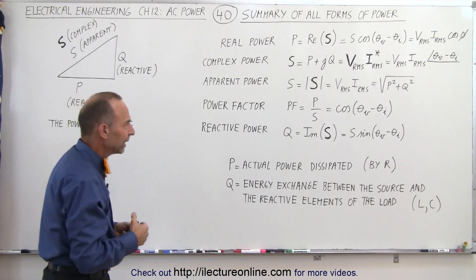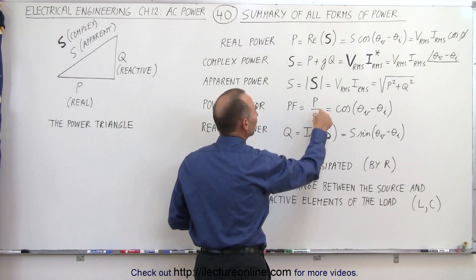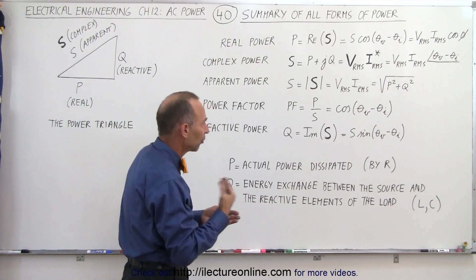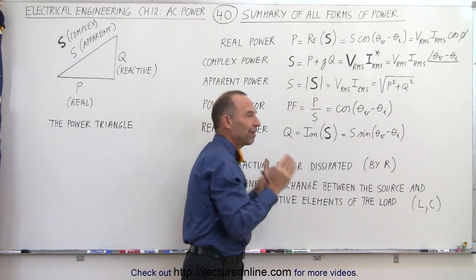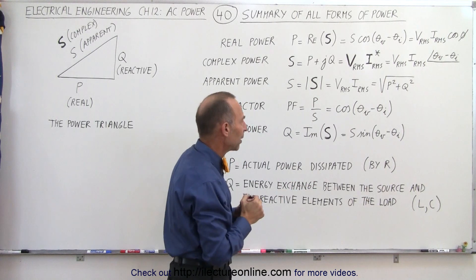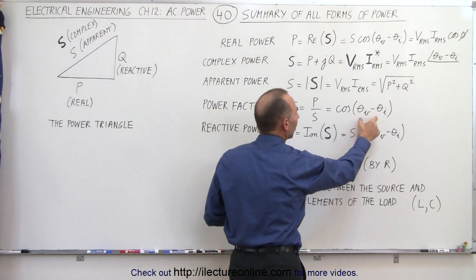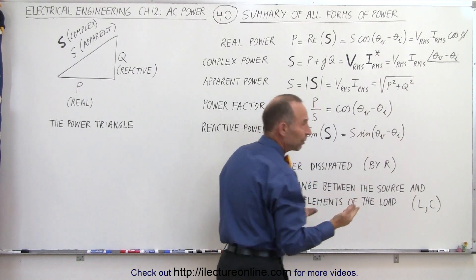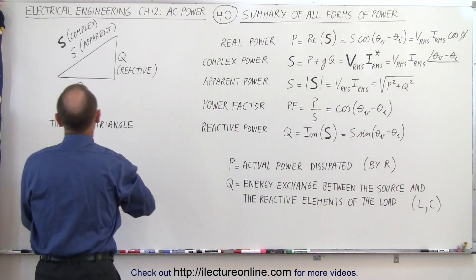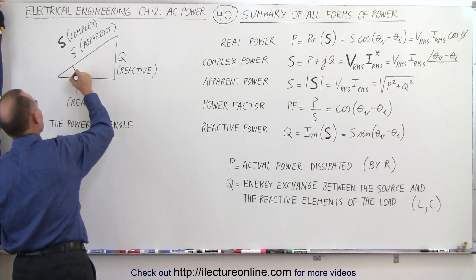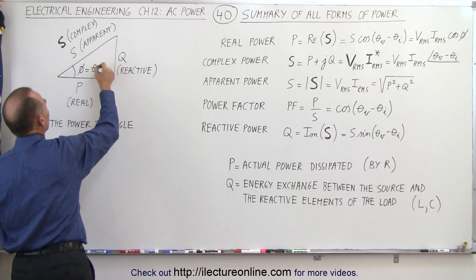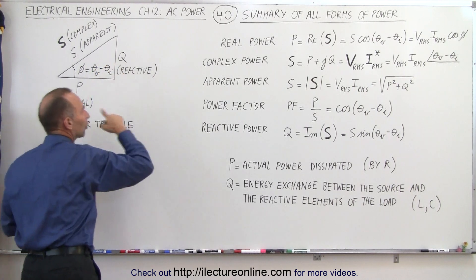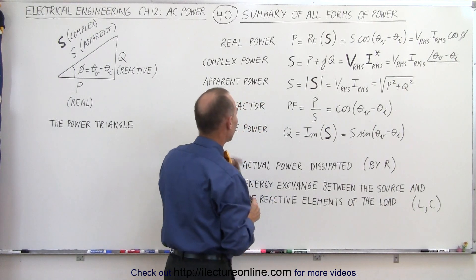The power factor is the ratio of the real power divided by the apparent power, which is the magnitude of the complex power. It is also the cosine of the difference of the phase angle of the voltage and the phase angle of the current — simply the cosine of phi in our phasor diagram, where phi equals theta sub V minus theta sub I. So the cosine of that is considered the power factor.